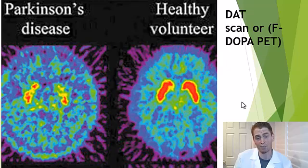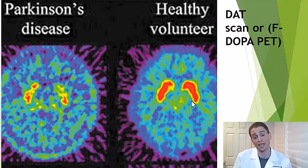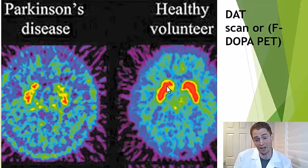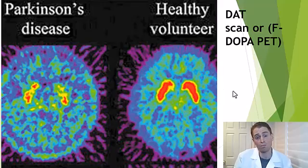Here is a DAT scan, a special type of PET scan where a tracer is given which binds to dopamine transporters, which can be used to diagnose Parkinson's disease. On the right, you see a healthy volunteer with avid uptake in the basal ganglia, which contain the dopaminergic neurons involved in initiation of movement. But in someone with Parkinson's disease there's much less uptake, though most people with Parkinson's disease are diagnosed based on clinical symptoms.